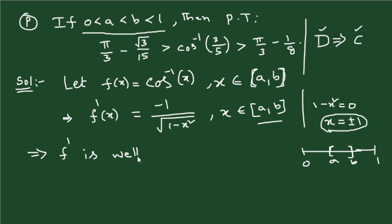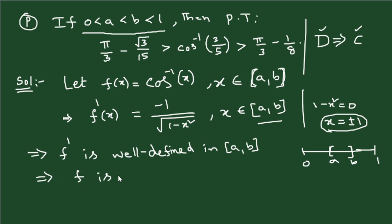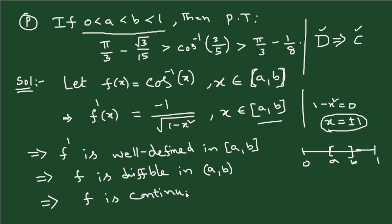Therefore f' is well-defined in the interval [a, b], which means f is differentiable in (a, b) — and in fact in the closed interval as well. Since differentiability implies continuity, f is also continuous on [a, b]. So both conditions of Lagrange's mean value theorem are satisfied.